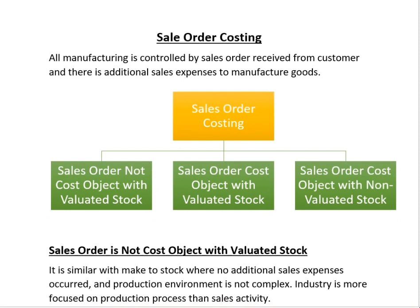This process is initially driven from the sale order. First we are going to receive the sale order from the customer. In industries like car manufacturing or aeroplane manufacturing, we initially receive the sale order from the customer, and the customer specifies that they want some customized products. So instead of making products and storing them in our warehouses, we are going to make customized products for the customer.